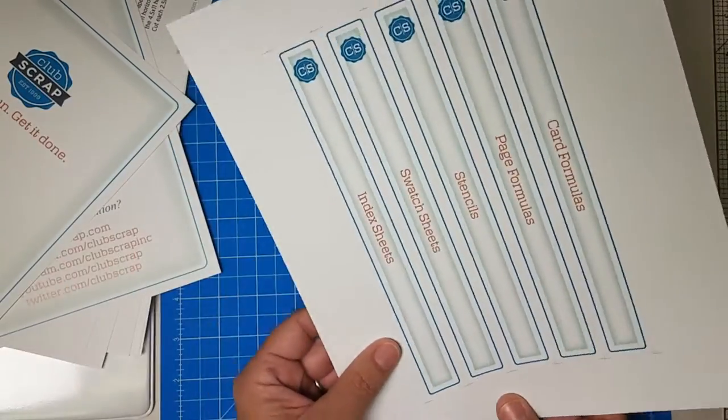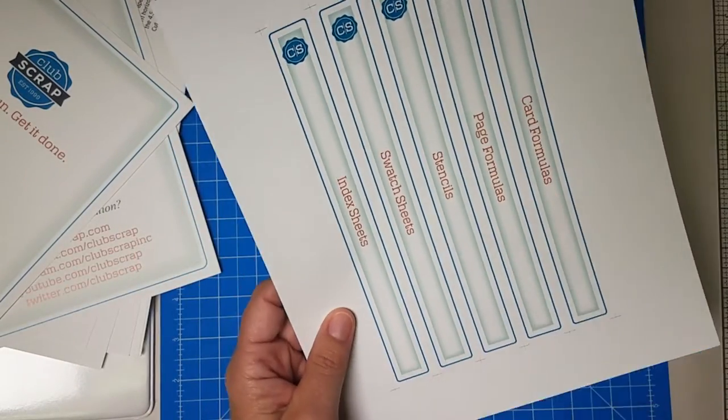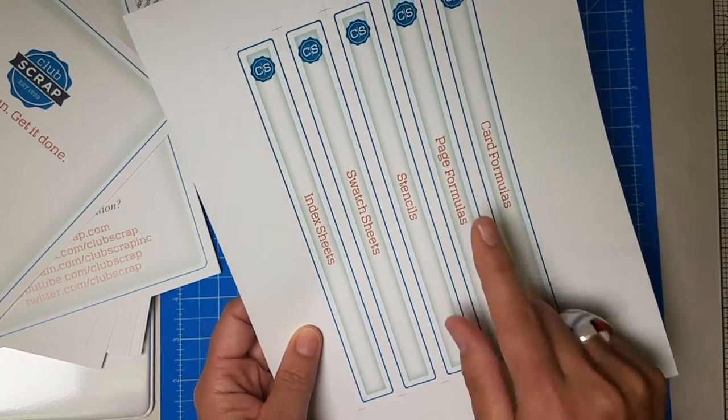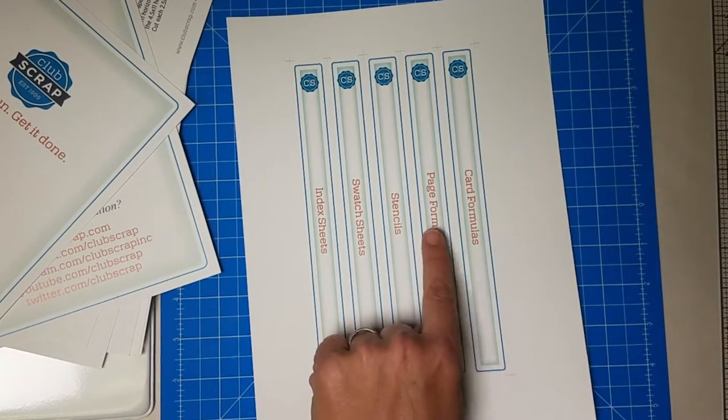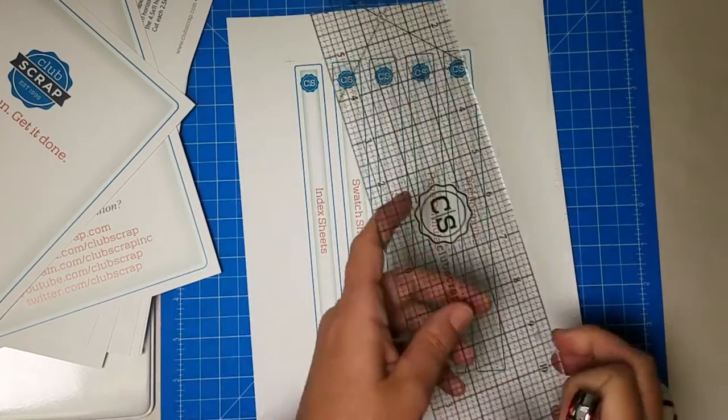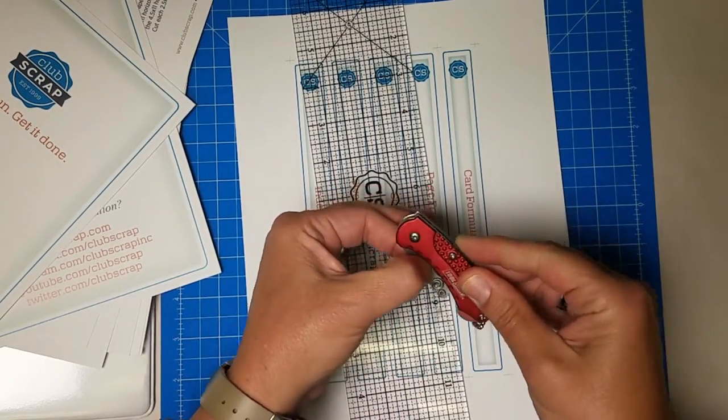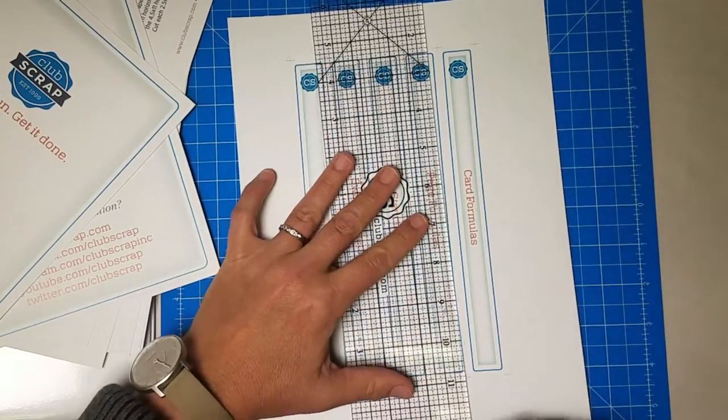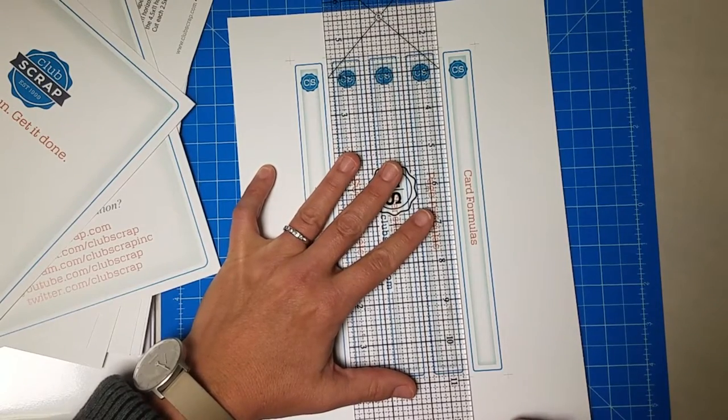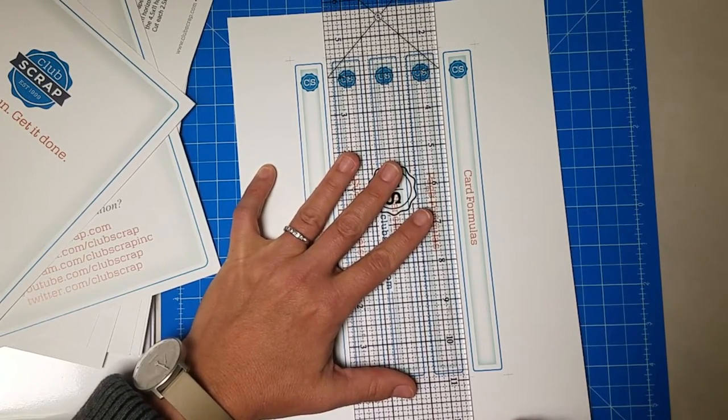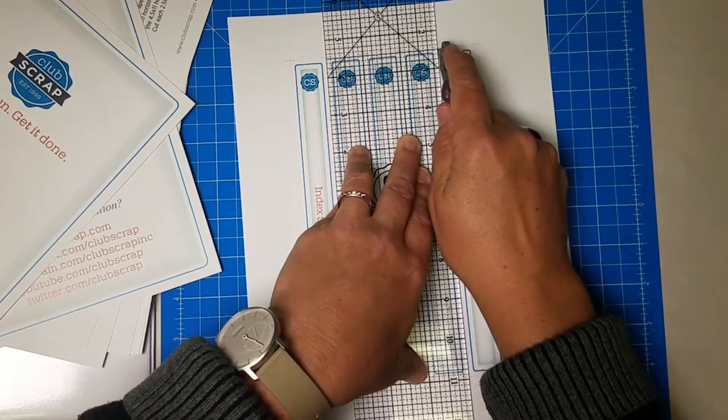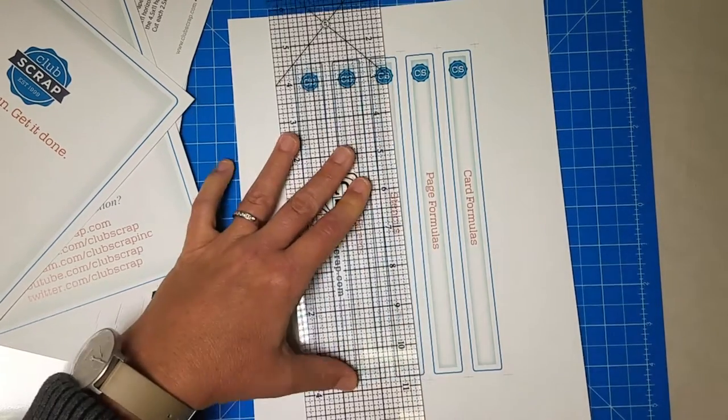And here is the series of spine options that I have, and I'm going to be using page formulas in this particular binder. So this is the spine insert I'm after, and I'm going to be using our awesome retractable blade knife here, and my grid ruler. So I'll line up the edge of the grid ruler with the intersecting point on that registration mark, and just pull that blade toward me.